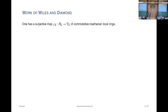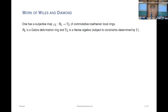So let me begin at the beginning, or for me anyway. It's the work of Wiles and Diamond, and it's really something I picked up from Diamond's Multiplicity One paper. The main step in the modularity theorem reduces to proving that a certain surjective map of commutative Noetherian local rings is an isomorphism—R is some Galois deformation ring, T is some Hecke algebra—and the goal is to prove this map is an isomorphism.